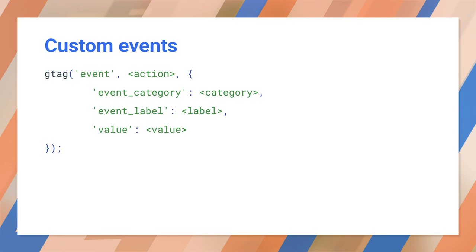Values associated with the event are added as parameters. These values represent the event category, event label, and a value. All of these entries are yours to define. These custom events allow us to dig into user interactions with our site.